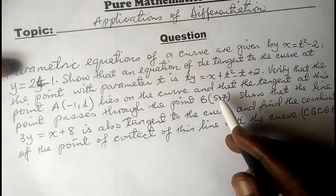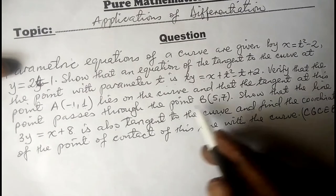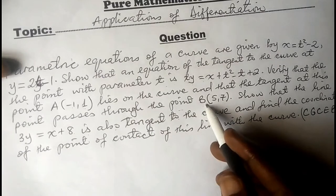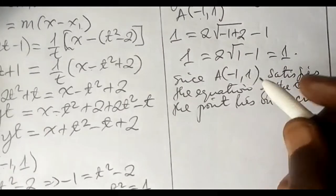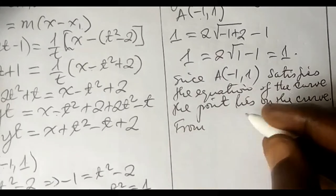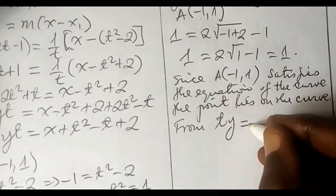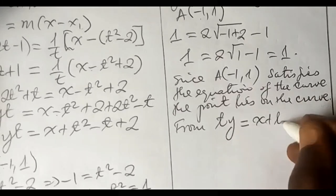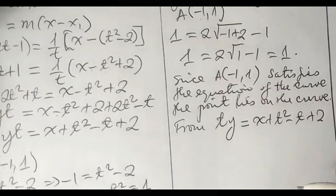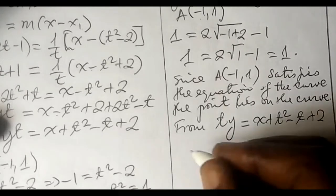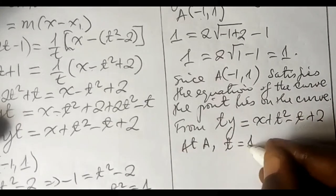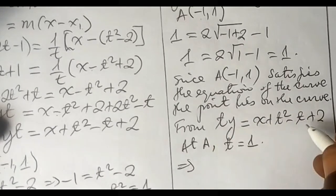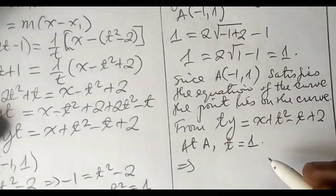We must also prove that the tangent at point A passes through point B with coordinates 5, 7. We use the general tangent equation ty equals x plus t squared minus t plus 2, already proven. At point A we found that t equals 1, so substituting t equals 1 into the general equation of the tangent gives the tangent at A directly.